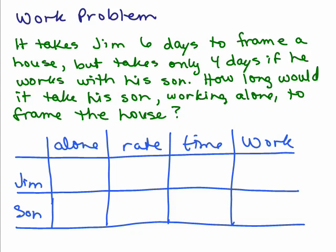All right, so we know if Jim frames the house alone, it takes him six days. So alone, Jim takes six days, which means his rate is the reciprocal one-sixth.